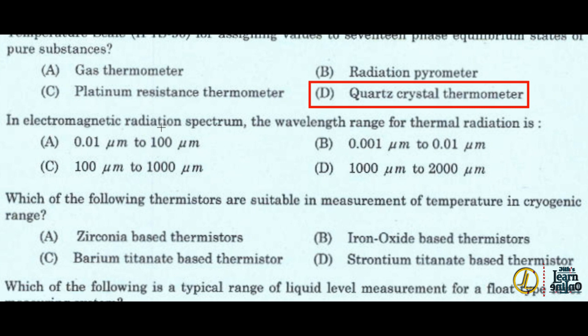In electromagnetic radiation spectrum, the wavelength range for thermal radiation is option A, 0.01 micrometer to 100 micrometer.